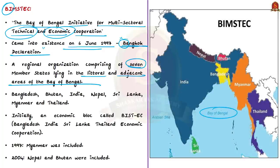As seen on the map, the seven member states of BIMSTEC are Bangladesh, Bhutan, India, Nepal, Sri Lanka, Myanmar, and Thailand.